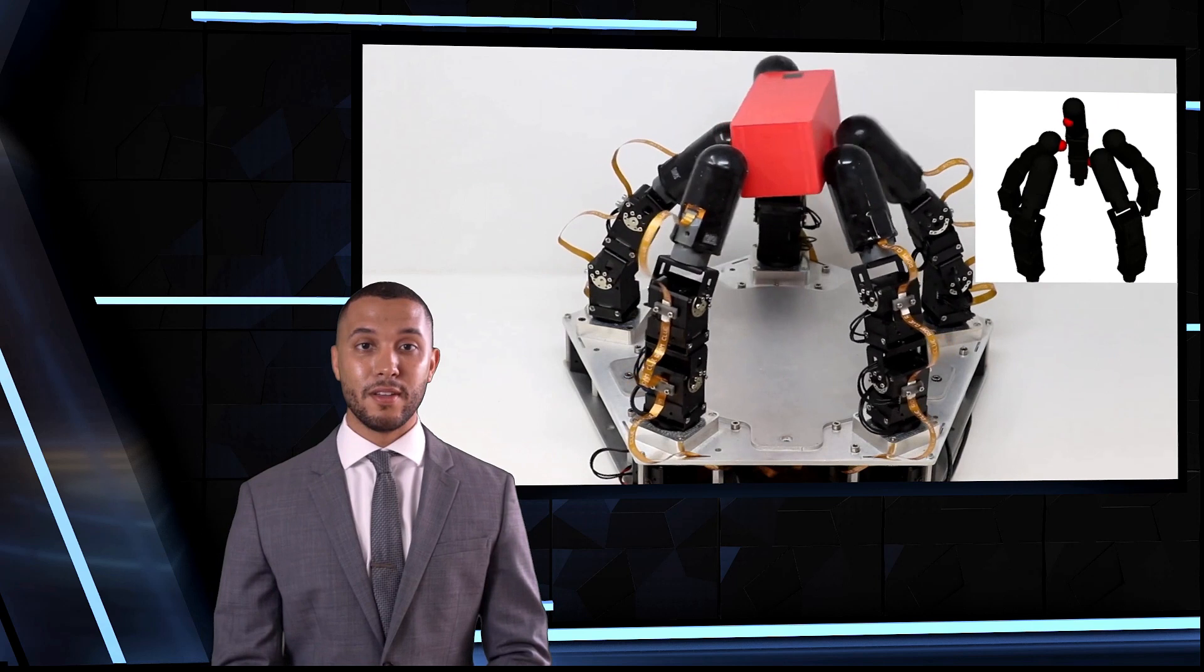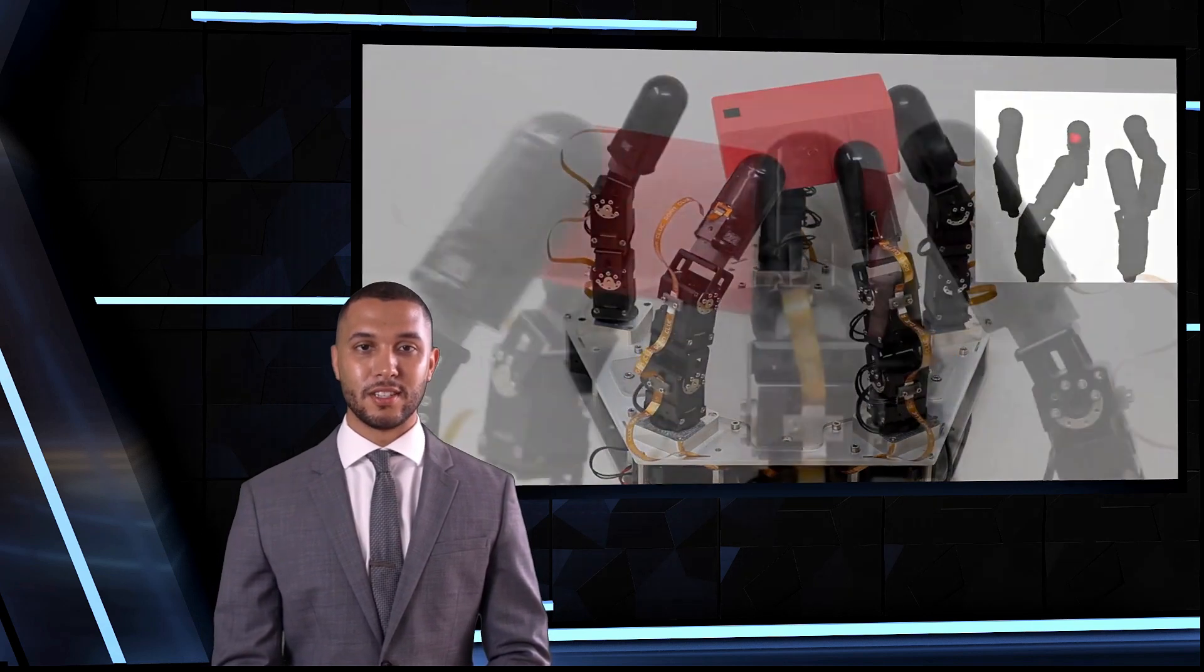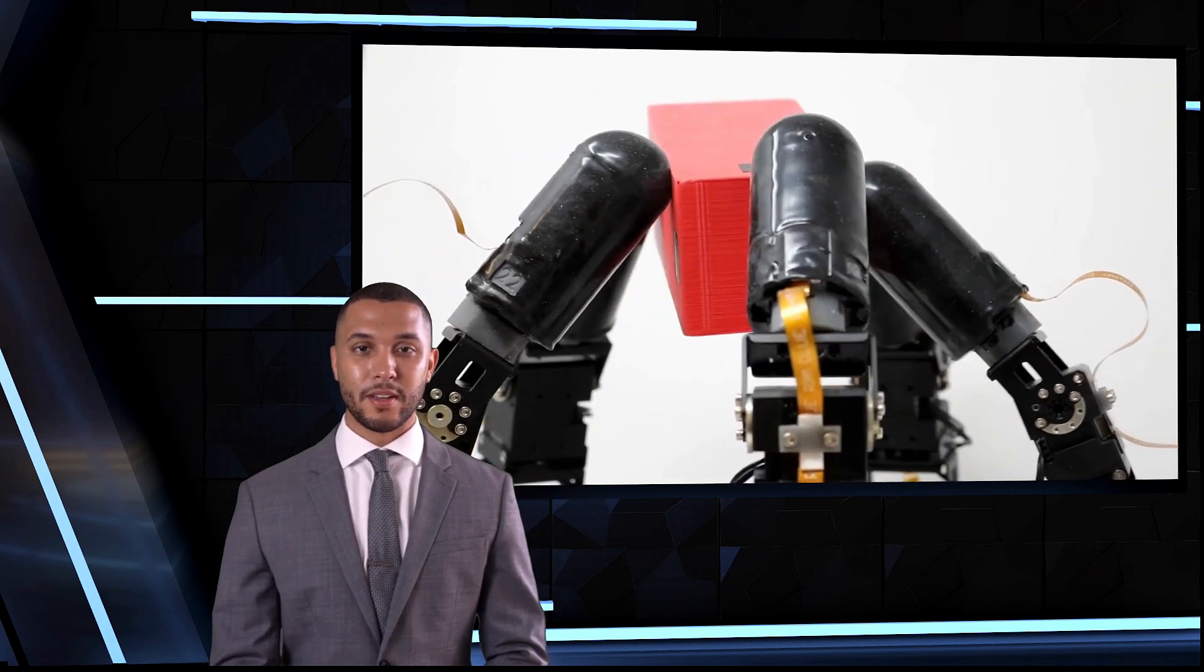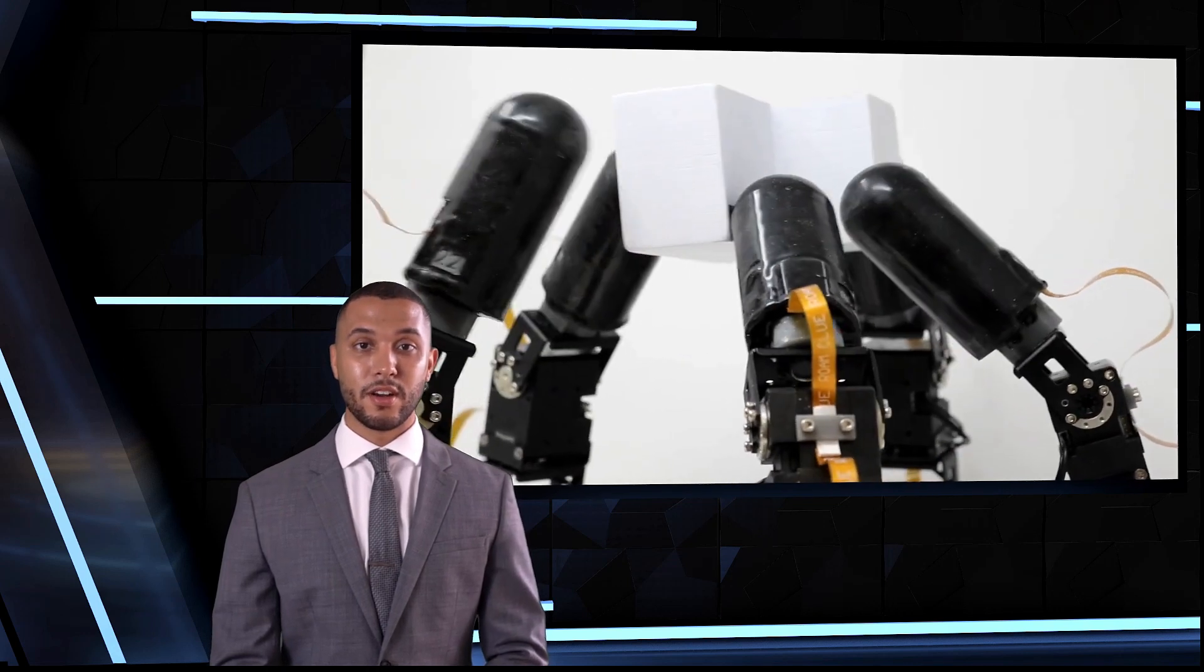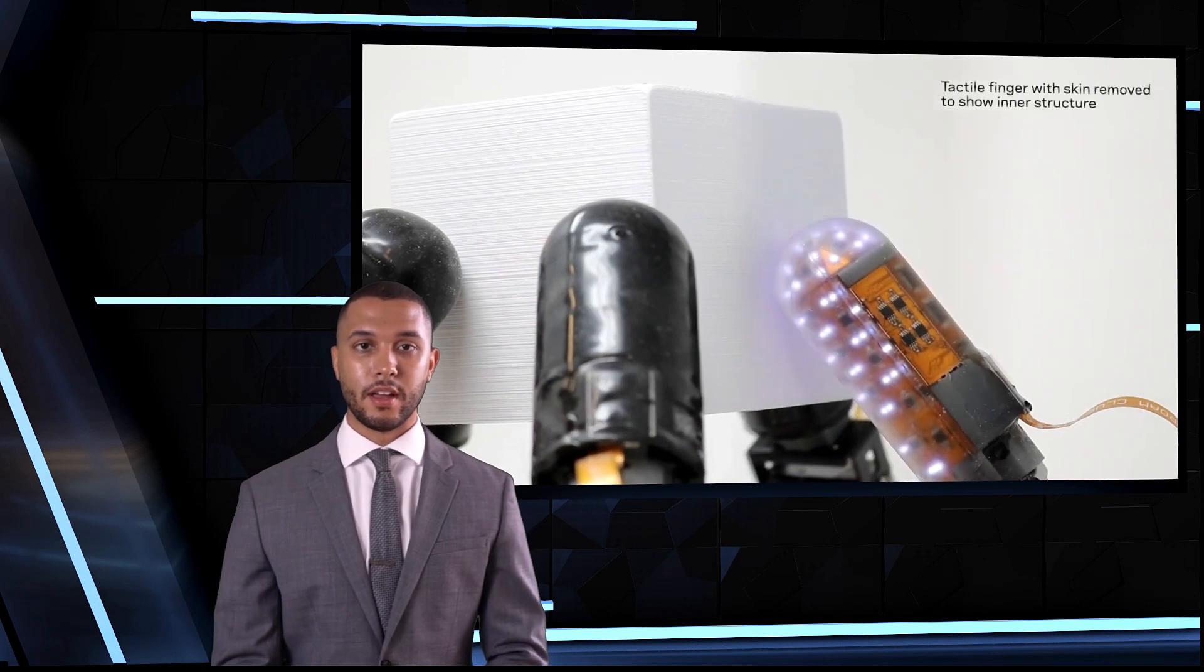This is an impressive achievement in the field of robotics and could have significant applications in various industries. For example, robots that can operate in the dark could be useful in manufacturing settings where lighting is limited. They could also be used in disaster response scenarios where visibility is low and the robot needs to navigate through debris.